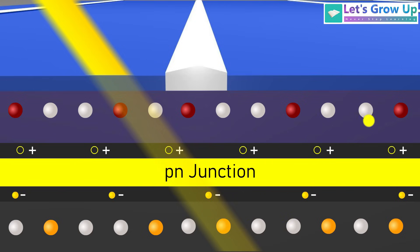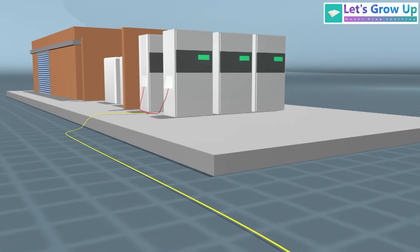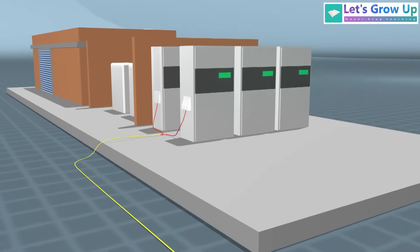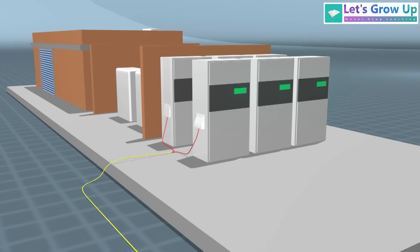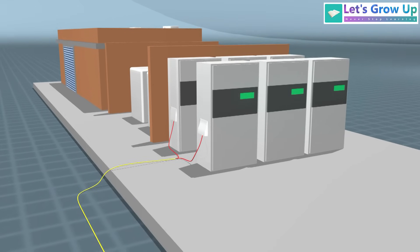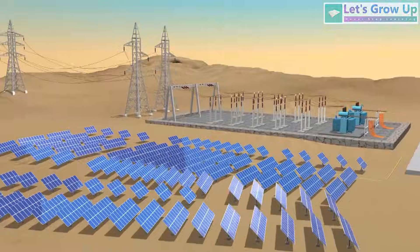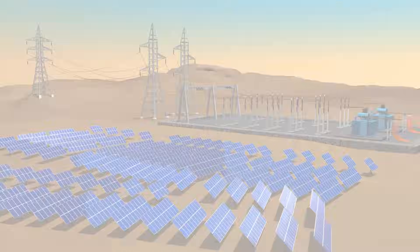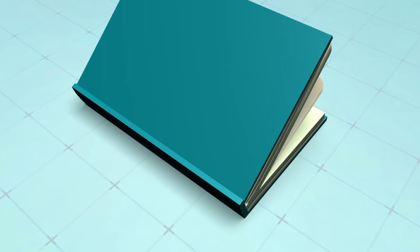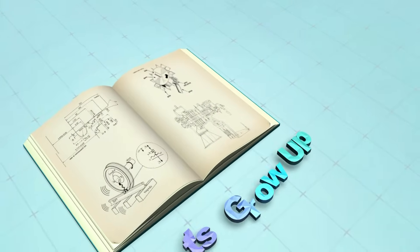The current flows continuously in one direction — that's why an inverter is required to convert the current from DC to AC. If you want to learn more about solar energy, check out our playlist. Thank you — let's grow up, never stop learning.